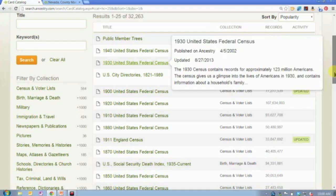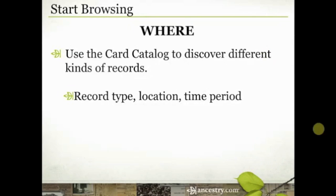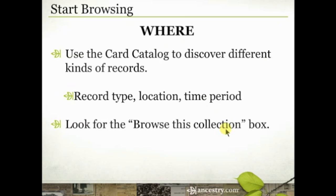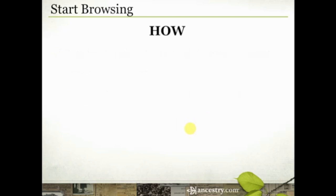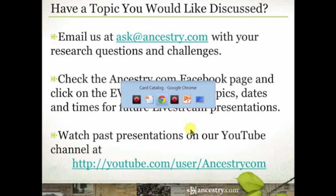Now, as I mentioned, some of the new collections do not have images attached. So we're going to look at some of those here in just a minute. You're looking again for that 'browse this collection' box that's going to be on the right-hand side when you come across a specific database. You're going to use those drop-down menus to discover what the browse structure is, and then when you find a specific section of images you're interested in, you can use those arrows or that number box to go image by image through those records.